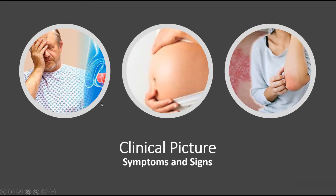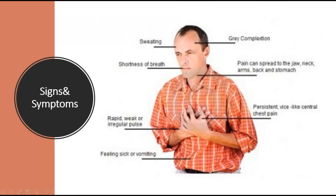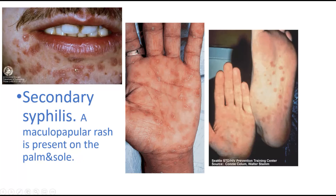Clinical manifestations include symptoms and signs. Symptoms are what the patient complains of — distension, drowsiness, cough, pain, weakness, shortness of breath — these are all symptoms. Signs are what the doctor sees on the patient. For example, a rash is a sign. The patient may complain of pain, which is a symptom, but if you see a rash, that is a sign.